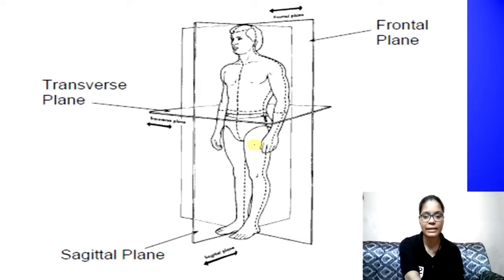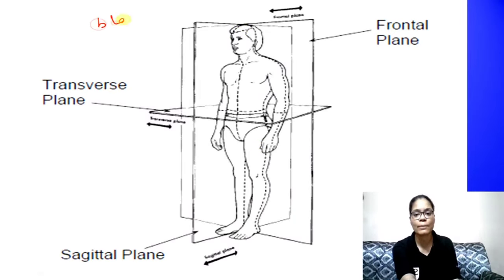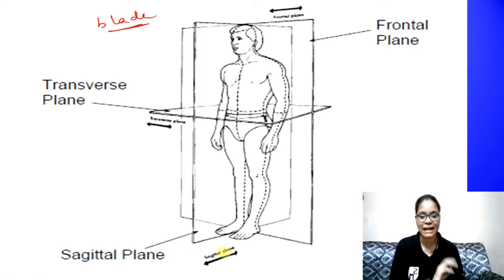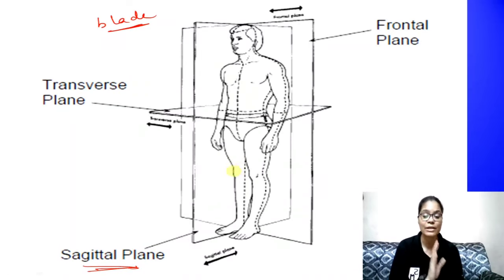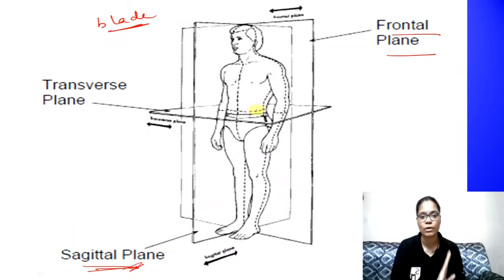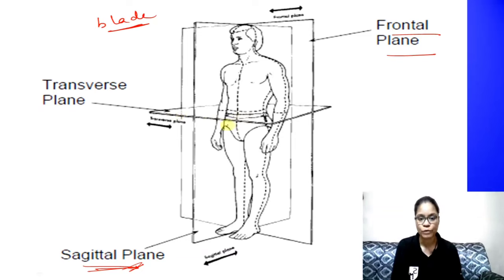If we look at planes in a diagram, imagine a big blade crossing your body. If the blade crosses your body from anterior to posterior, that means it is working in the Sagittal plane. If the blade crosses your body from side to side, that is the Frontal plane — side to side, meaning ear to ear and hand to hand. And if you have a horizontal plane, you can understand that this is the Transverse plane.